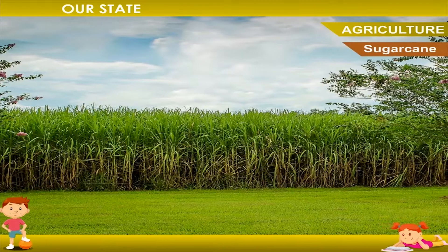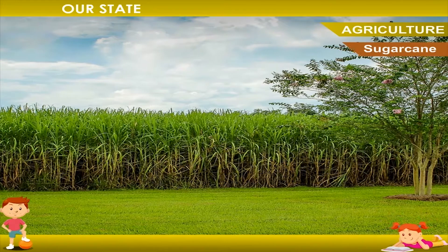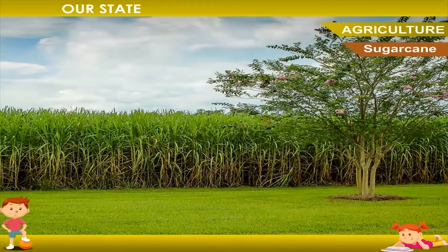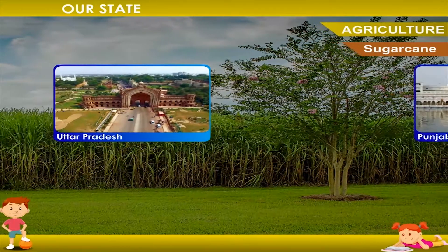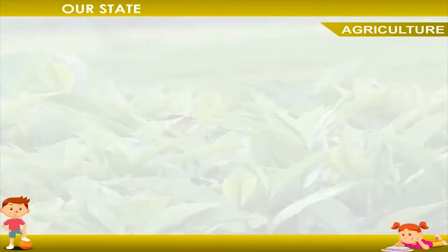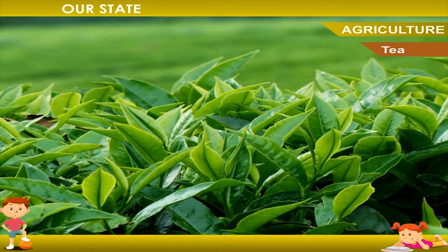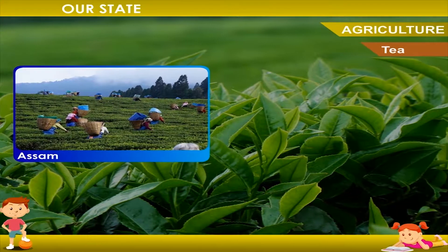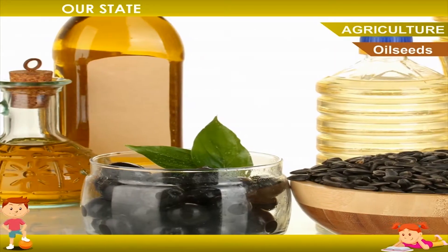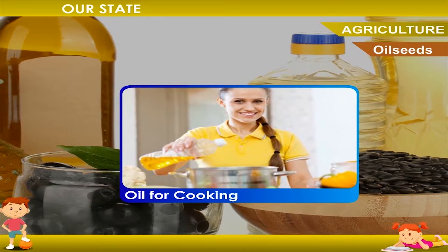Sugar cane is another important food crop. Tea is a plantation crop produced in the tea gardens of Assam and the northern parts of West Bengal. Oil seeds provide oil for cooking and are grown in South India.